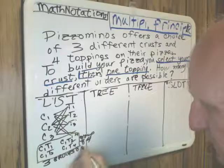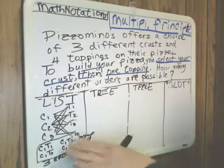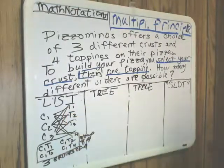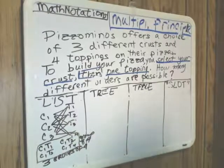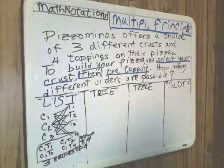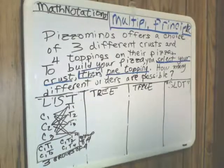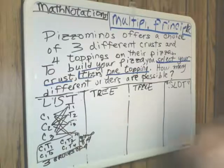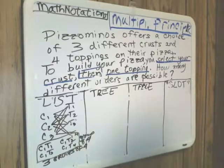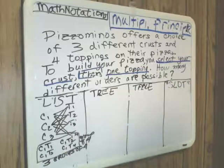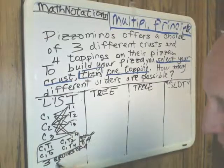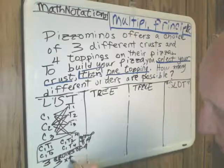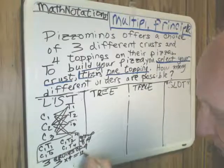This is a verbal description, this is a list, this is a visual, and we're trying to combine all those representations. We have symbolic as well. We would certainly expect students from third grade on to know that three groups of four is modeled by multiplication: three times four. So there are 12 ways to build our pizza.